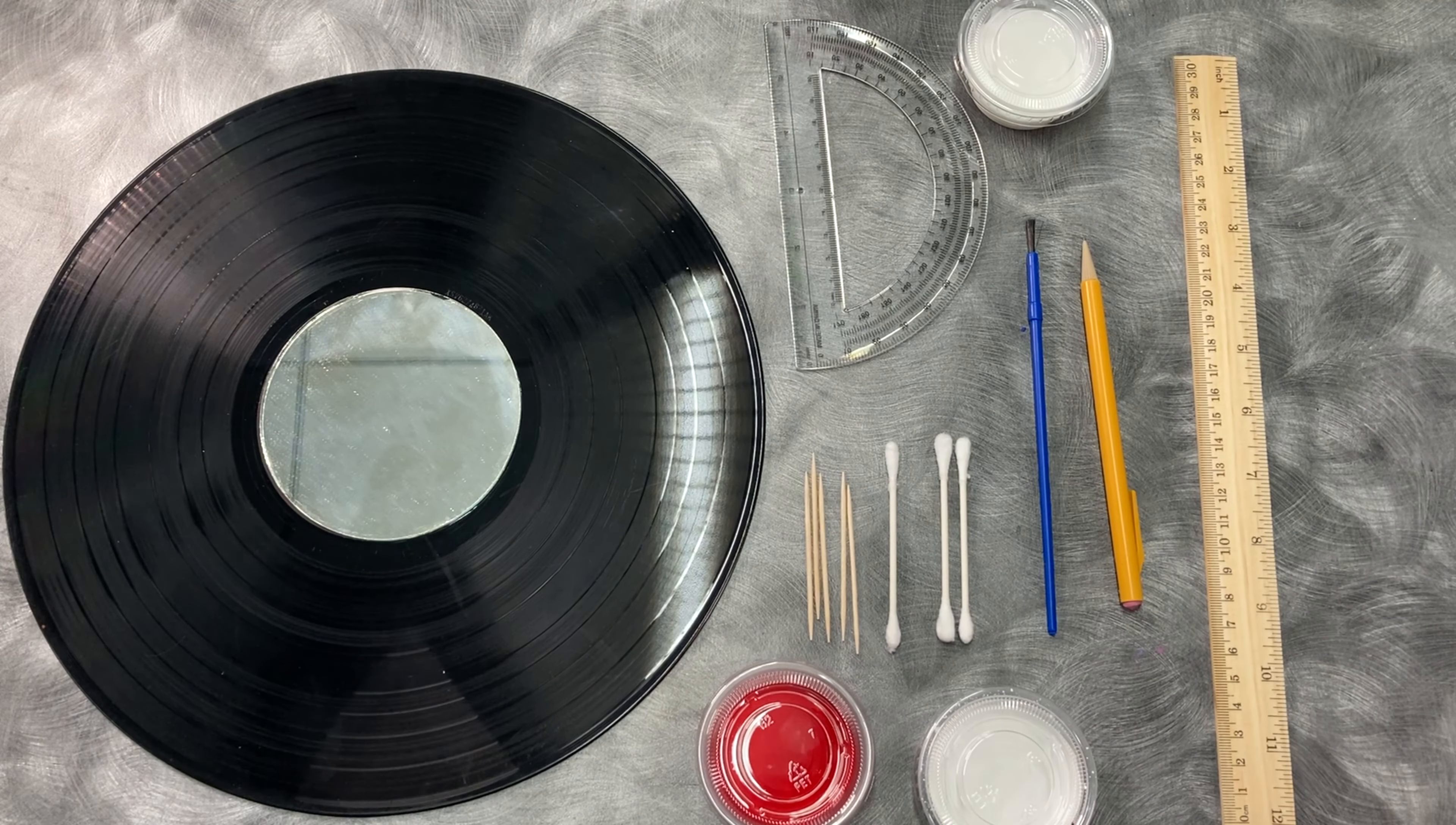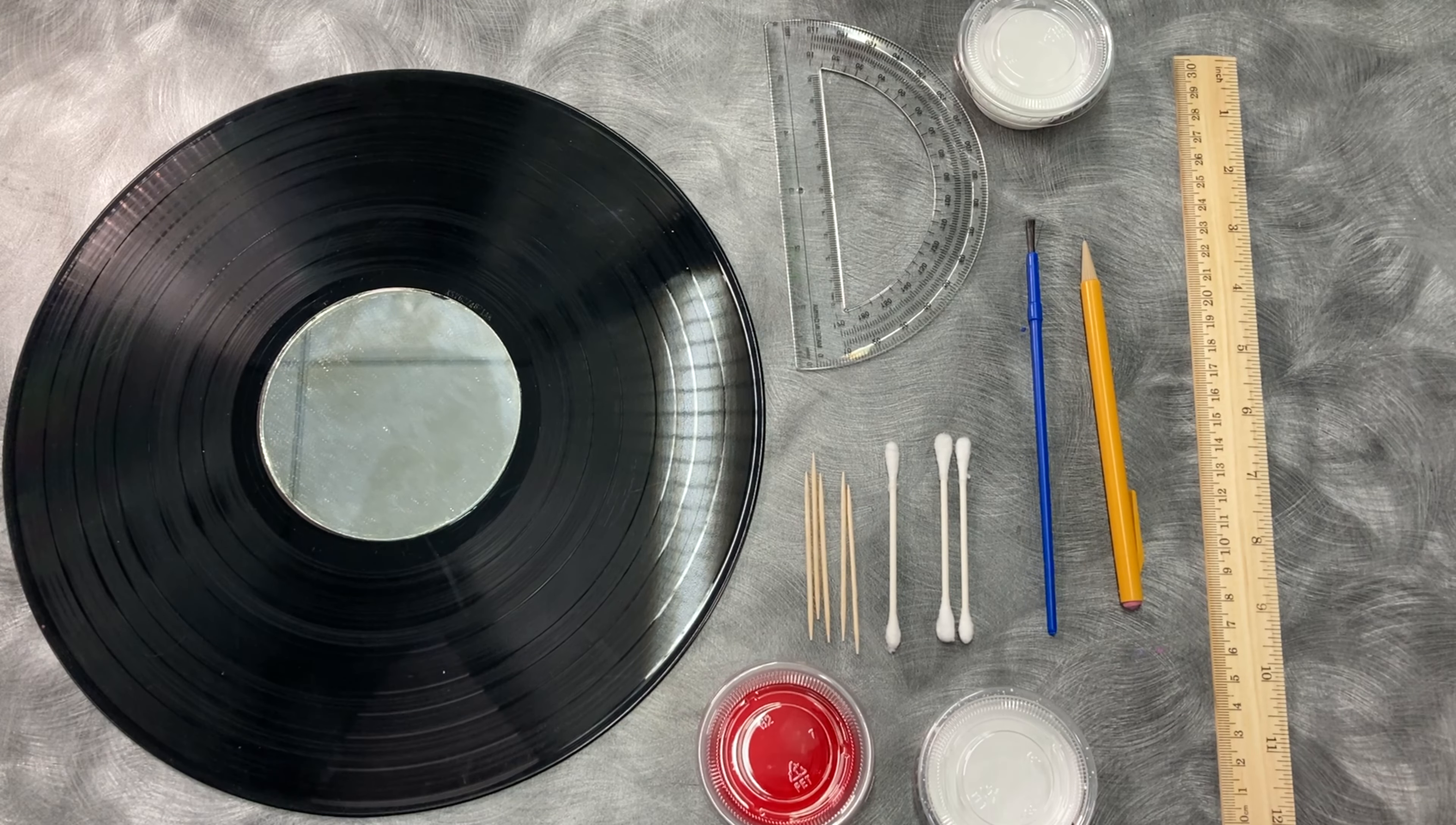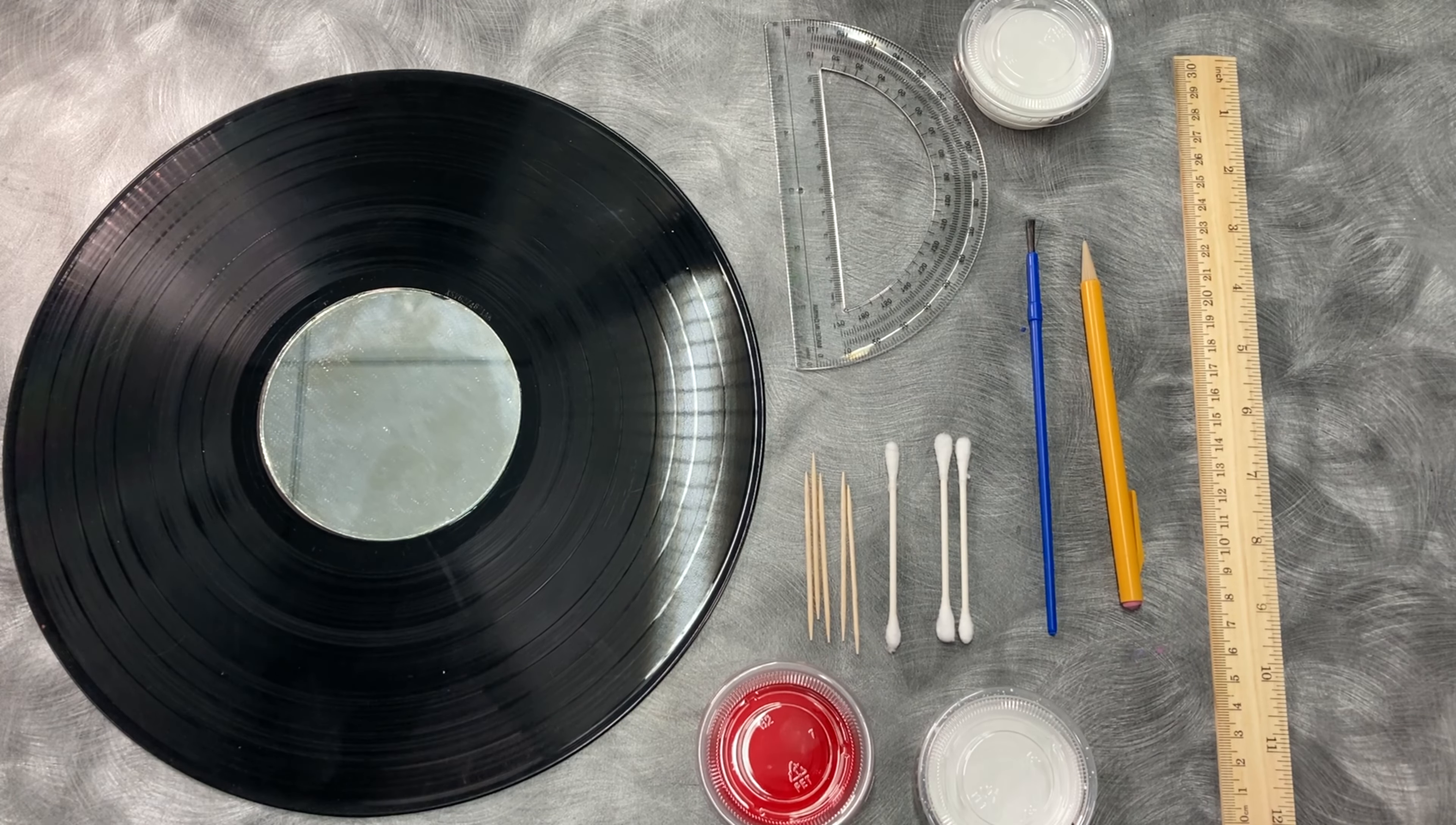To make a binary parachute painting, you're going to need a record, a 4-inch diameter circular mirror, glue, q-tips, red paint, white paint, a paintbrush, a pencil, some toothpicks, a ruler, and most importantly, a protractor.